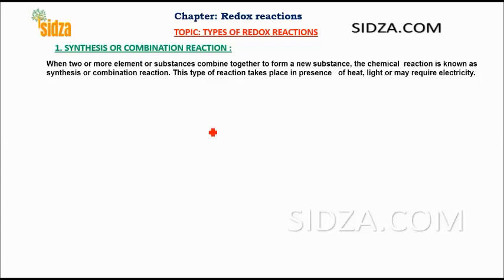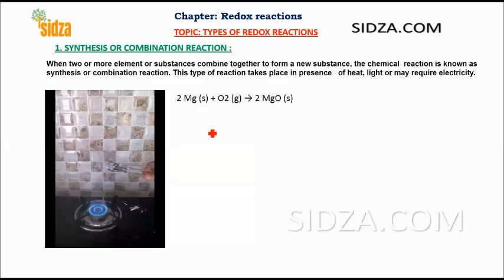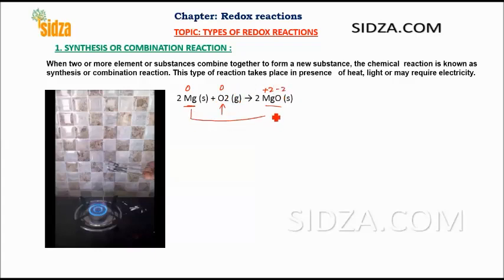One of the simplest examples is when you react magnesium with oxygen and it forms magnesium oxide. This is a redox reaction because the magnesium's oxidation number increases from zero to plus two, and oxygen in the elemental state has an oxidation number of zero while in MgO it is minus two. So magnesium gets oxidized while oxygen is reduced.